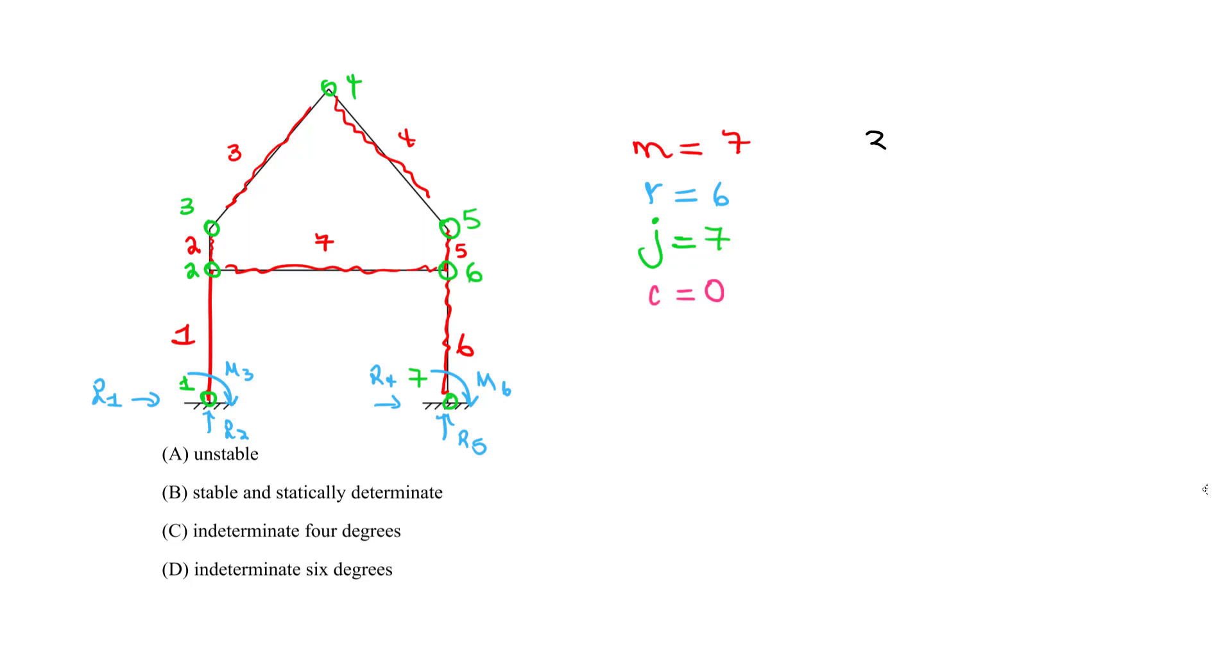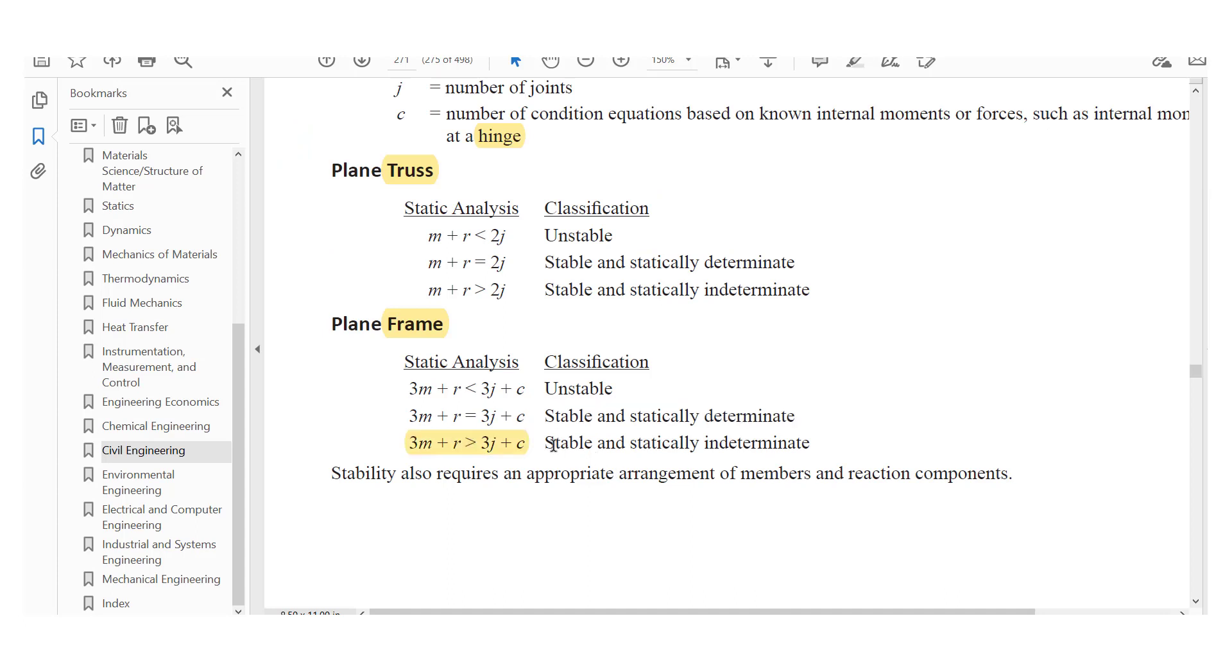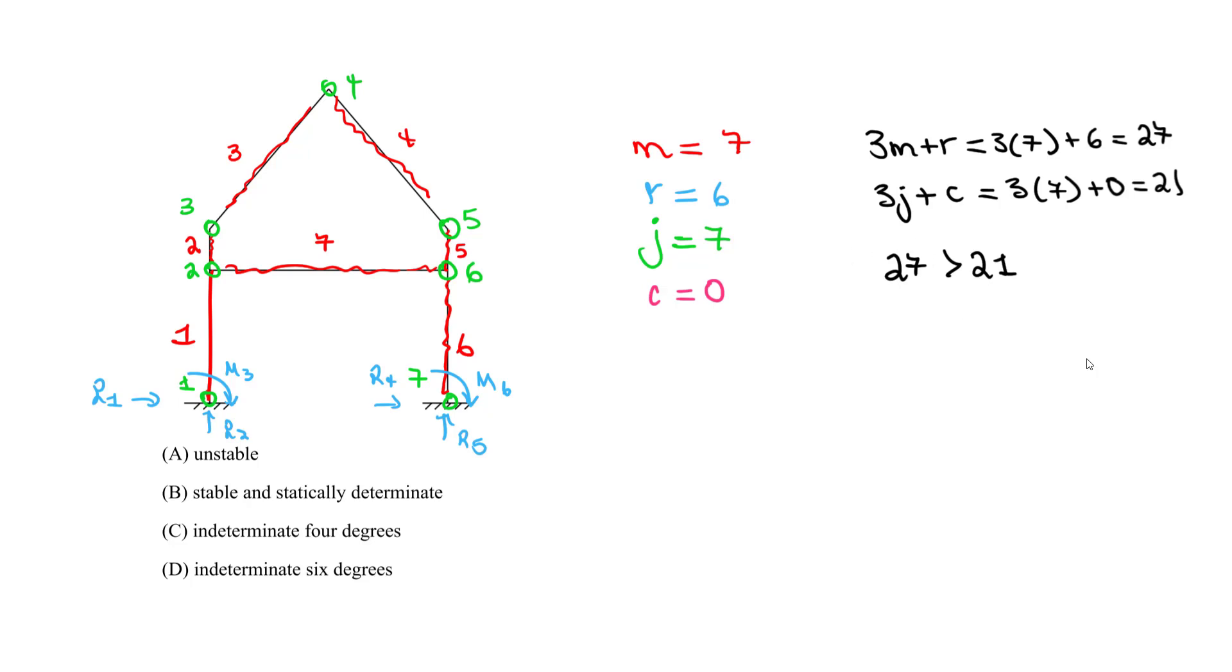So now we do the 3M plus R equals to three times seven plus the six, and for that you should get 27. Then on the right side, we do 3J plus C. So we have three times seven plus zero, and you just get 21. So now we just take the difference, and that will be our degree of indeterminacy. So we know in this case that 27 is bigger than 21. So we know it's going to be indeterminate. If it's this case, it's going to be stable and statically indeterminate, but we want to determine the number of degrees. So you just take the difference. So we just take the 27 minus 21, and you get six degrees. So the number of degrees here is going to be six degrees. So our answer should be indeterminate with six degrees of indeterminacy.